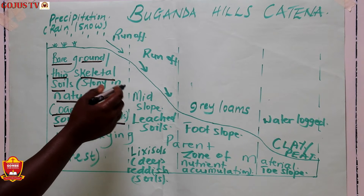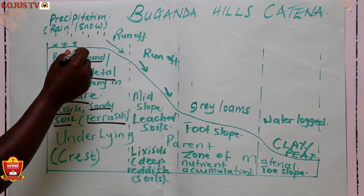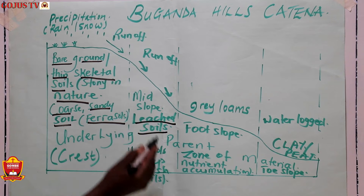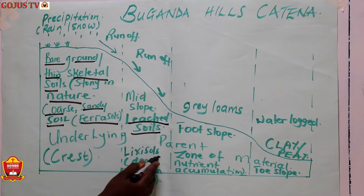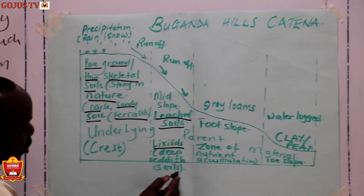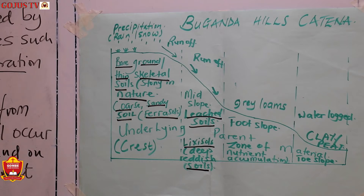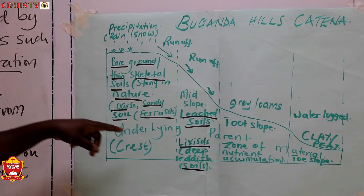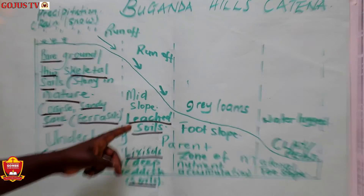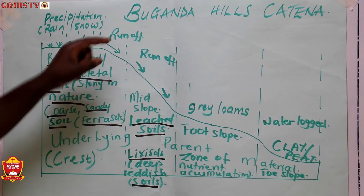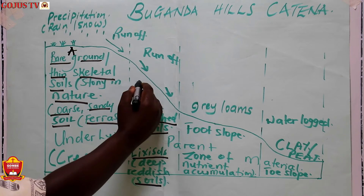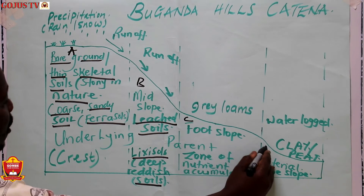Then we have the mid slope. After the top slope, we have a mid slope, and here we have what we call leached soils. These are deep reddish soils. They are deep reddish because of the leaching process which has taken place. So the mid slope is a zone of accumulation — what has been carried away from zone A is being deposited in part B. We can label these zones A, B, C, and D.